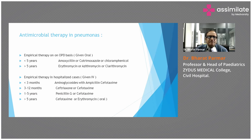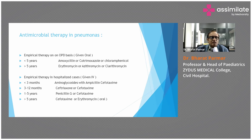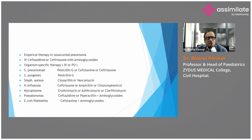Empirical therapy for hospitalized cases: for children aged less than three months, aminoglycosides with ampicillin or cefotaxime. Age group three to twelve months: ceftriaxone and cefotaxime. Age group one to five years: penicillin G and cefotaxime. For children more than five years: cefotaxime or erythromycin oral. For nosocomial pneumonia: IV ceftazidime or ceftriaxone with aminoglycosides.